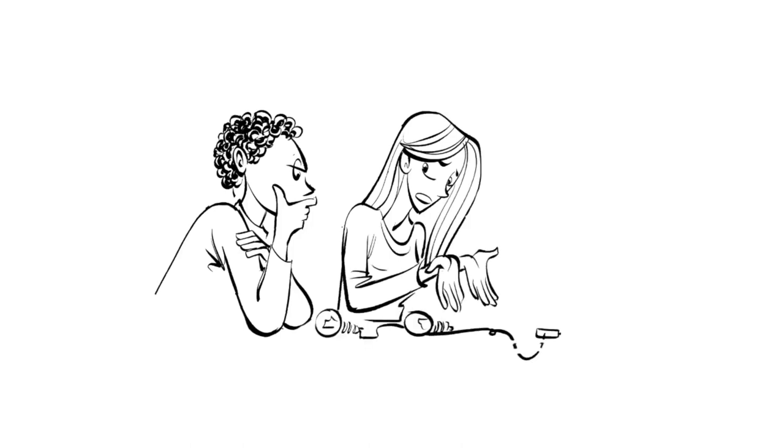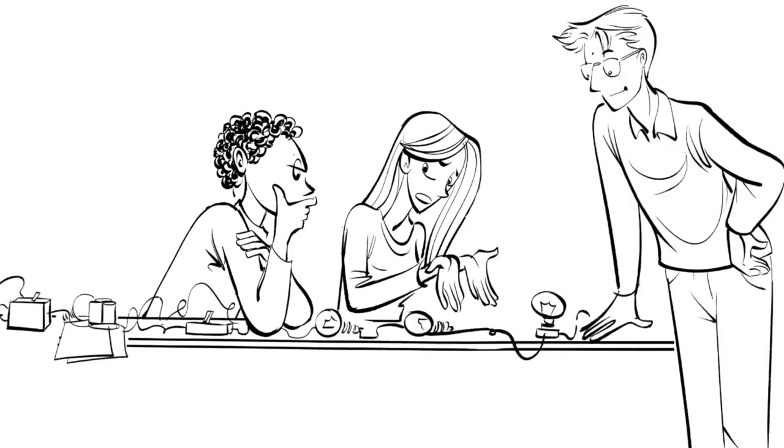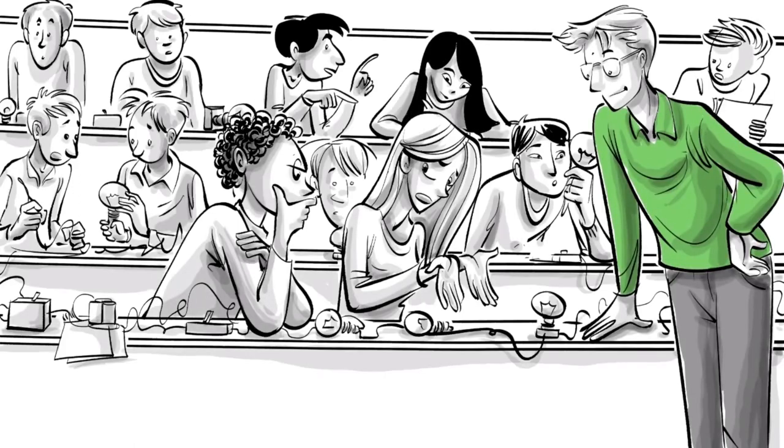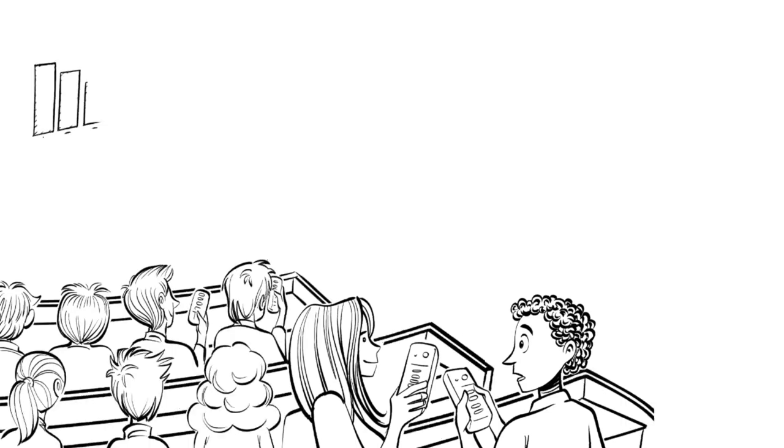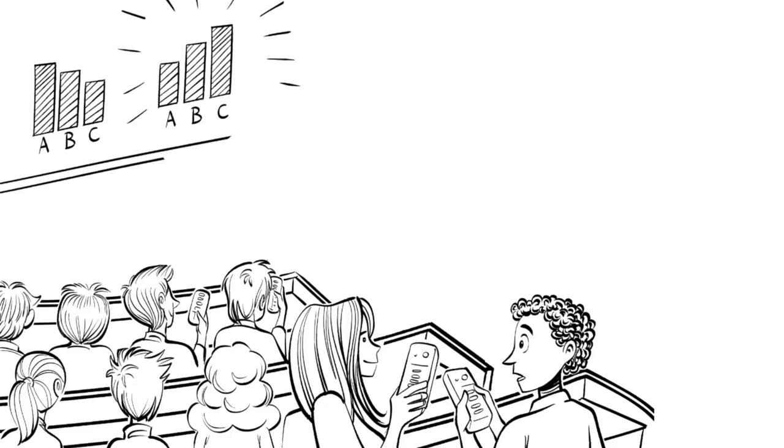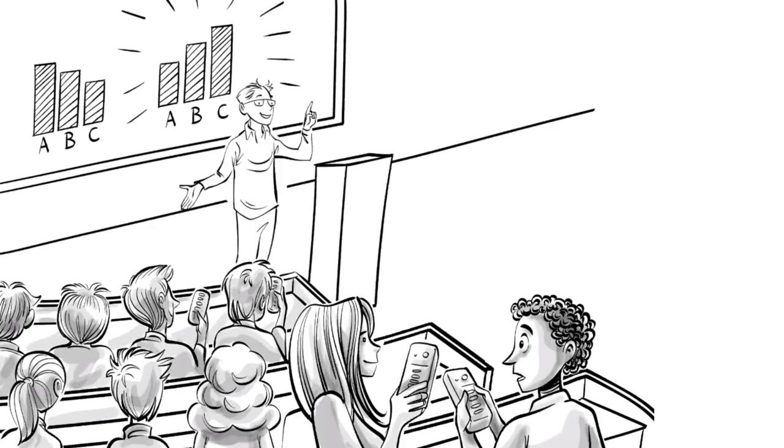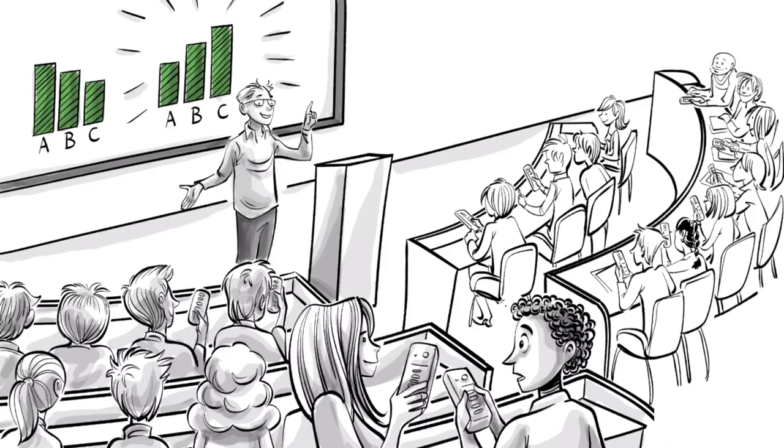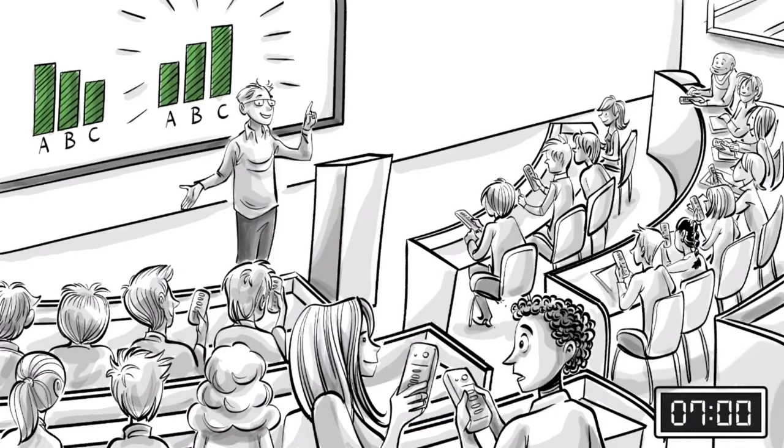During the discussion, the students have to come up with a reason for their answer and why the others may be wrong. Meanwhile, the instructor is circling around, listening in to gauge student thinking, and answering brief questions. Then, there will be a second clicker vote. And only now the results will be shown. Typically, the second vote will be much better than the first, as students learn a great deal from their discussions. An ideal question will have about a third correct on the first vote and 85% correct on the second. All this takes around seven minutes.